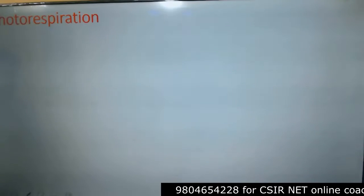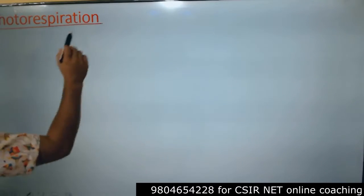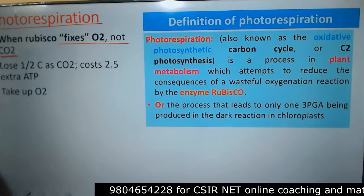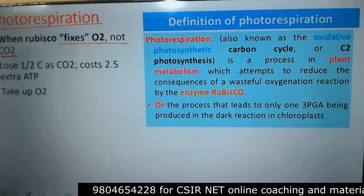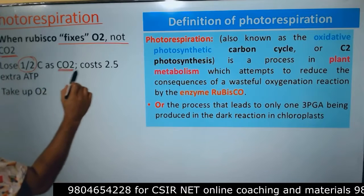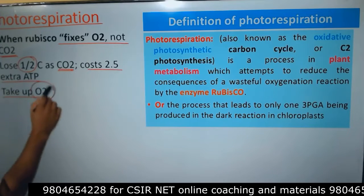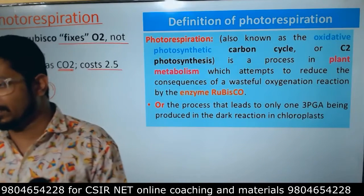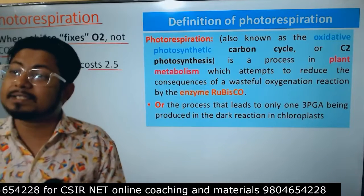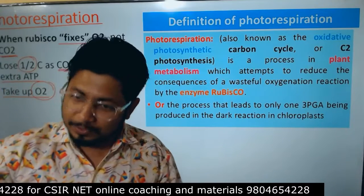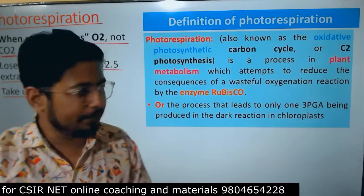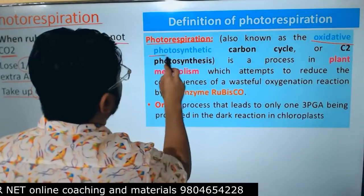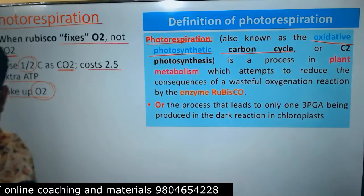This is definitely not desired. When Rubisco fixes oxygen instead of CO2, we call it photorespiration. It loses carbon as CO2, costs 2.5 extra ATP, and takes up oxygen from the environment — all bad outcomes. The plant cannot produce enough food due to carbon loss, and it is consuming oxygen that plants don't actually need. Photorespiration is also known as the oxidative photosynthetic carbon cycle.